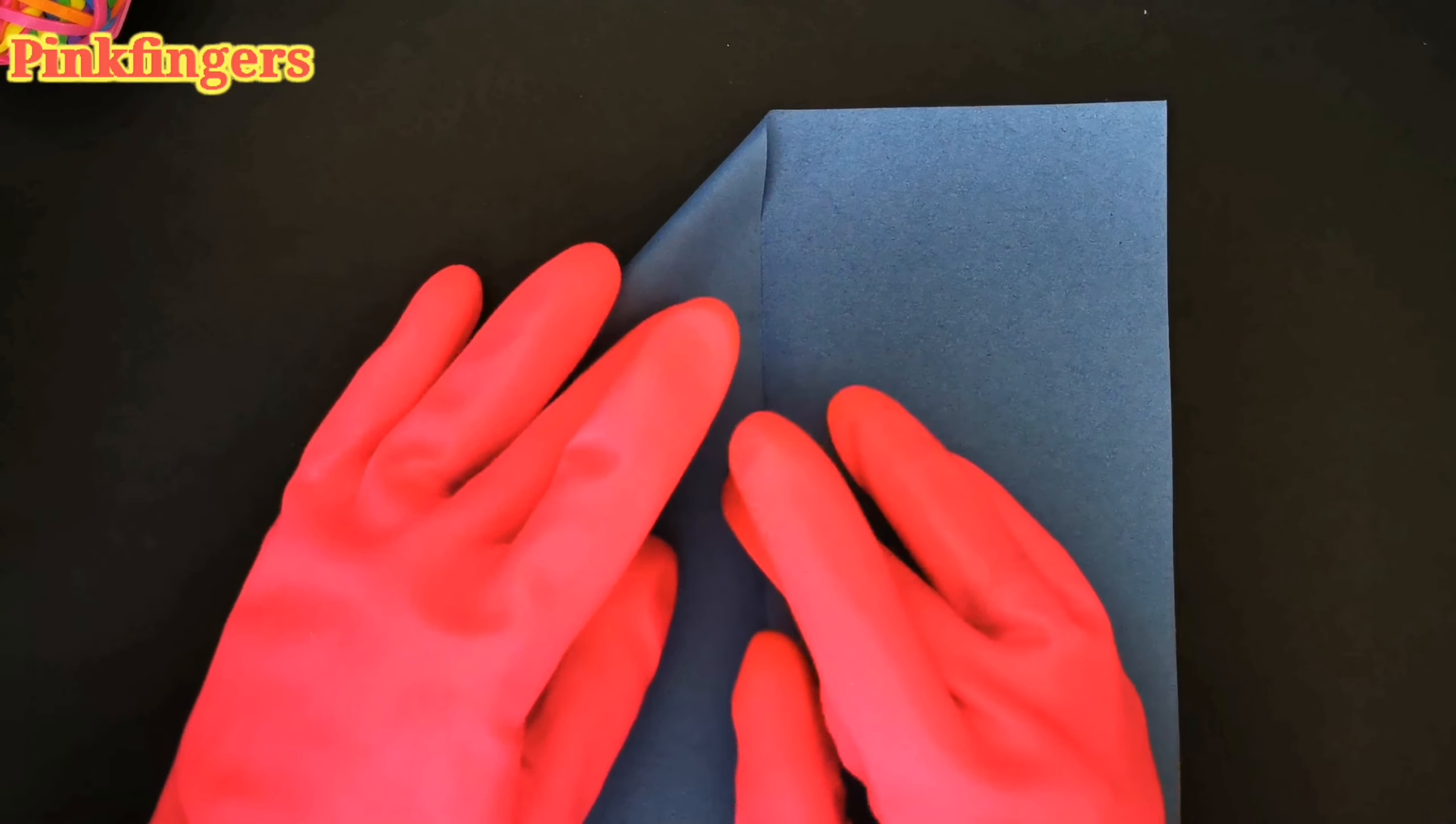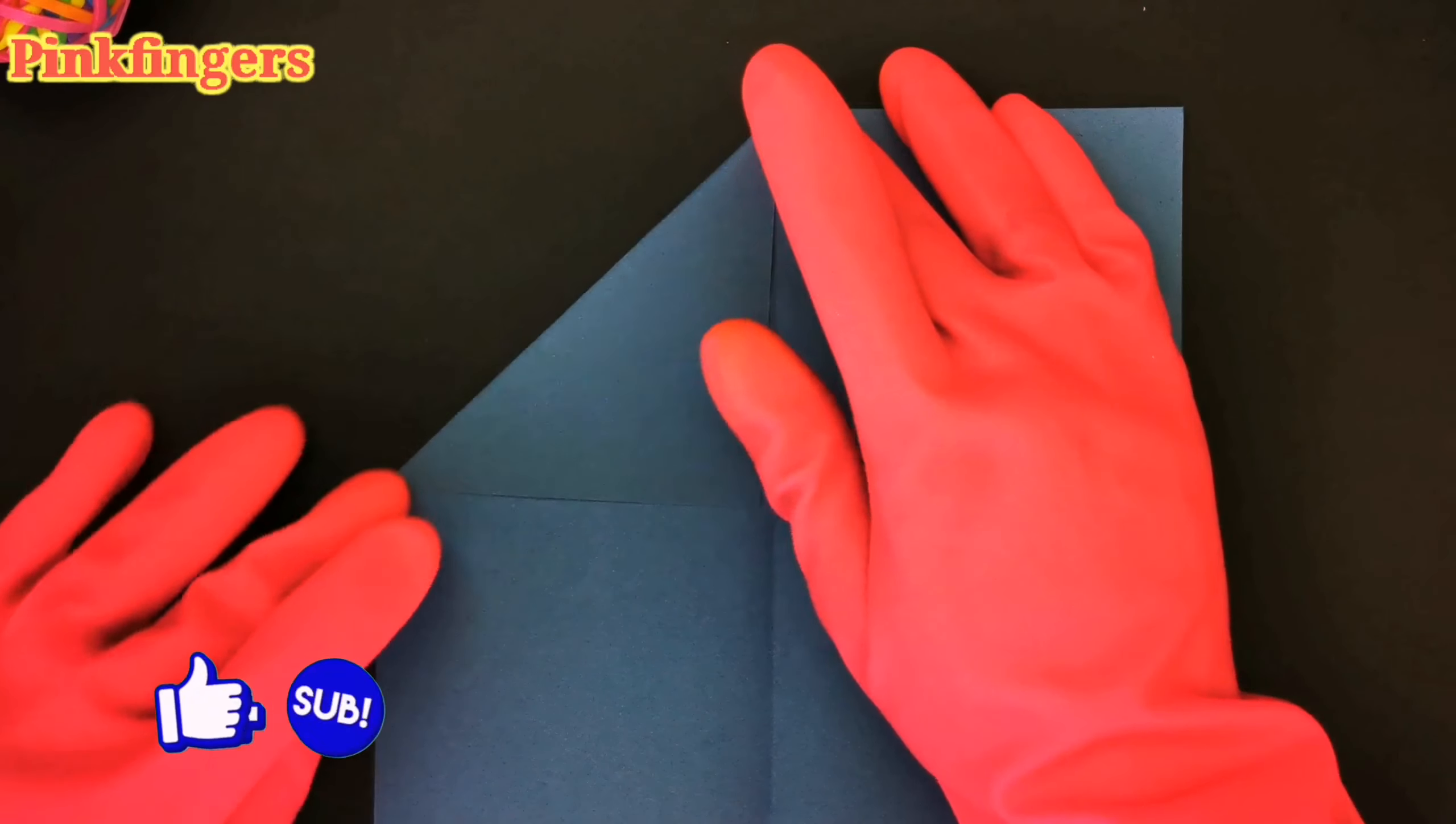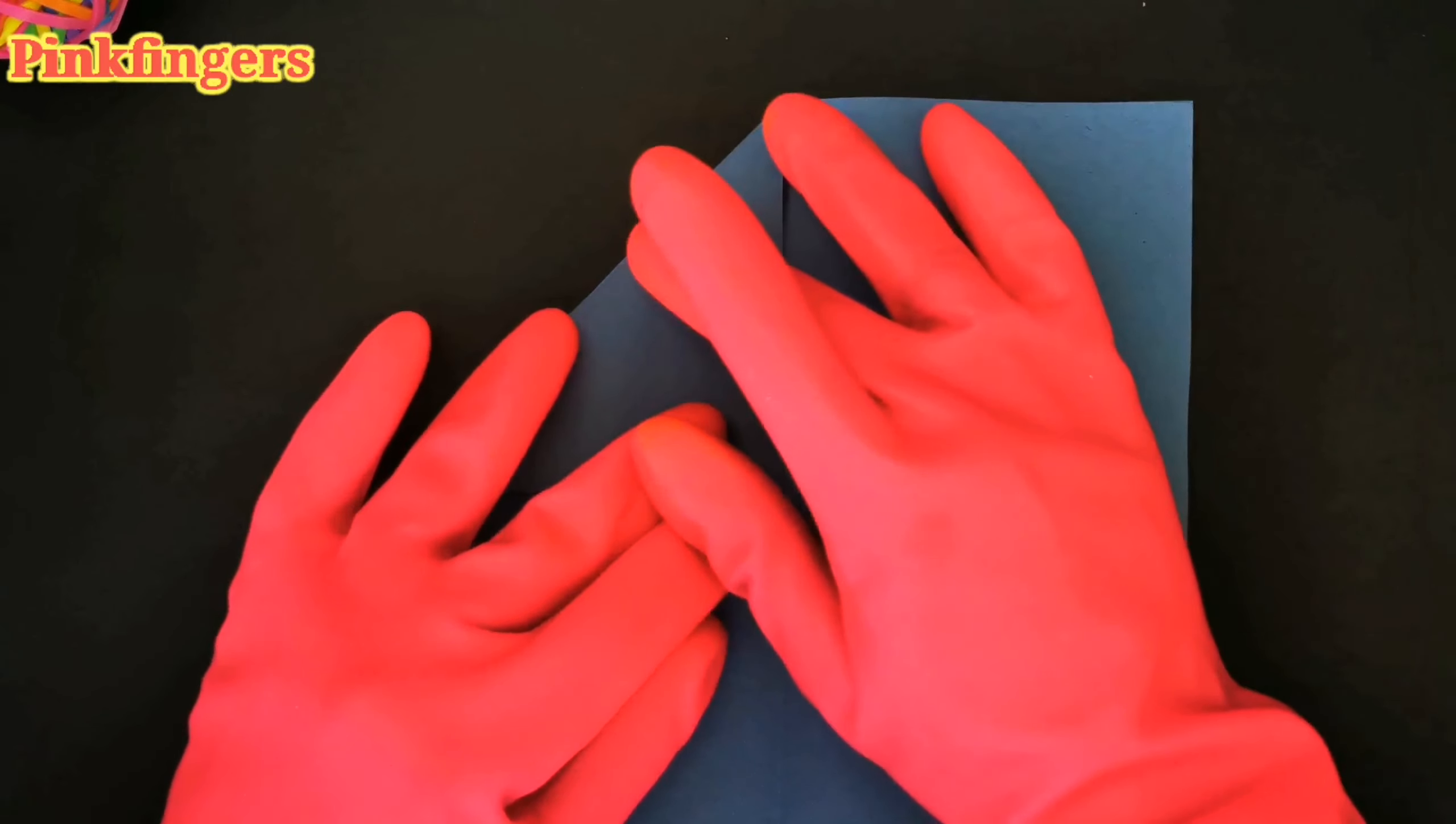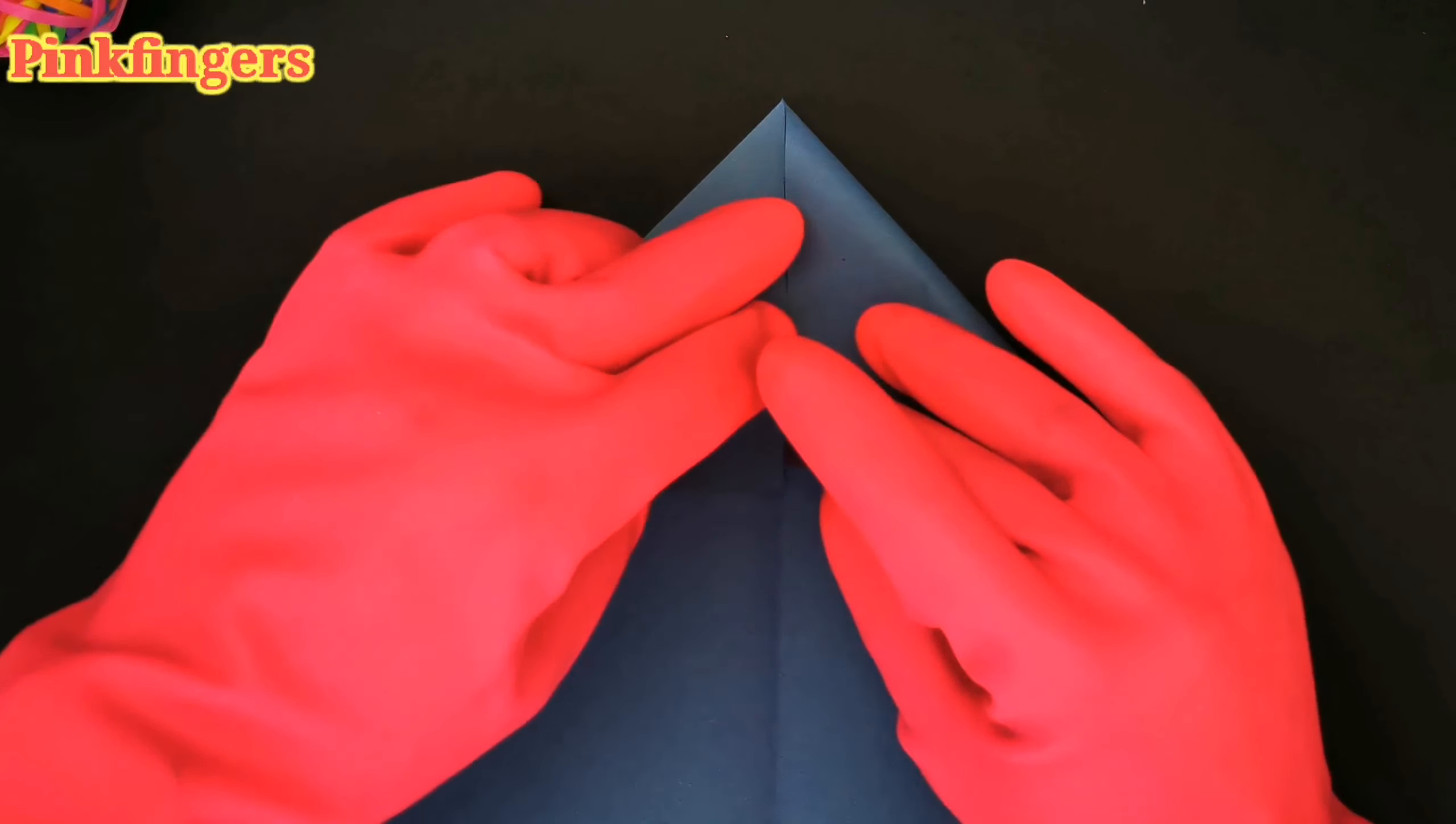And we fold the top into a triangle. Once you're happy with the crease you have, line it up straight and press hard to the edge. Next we do the same to the other side.